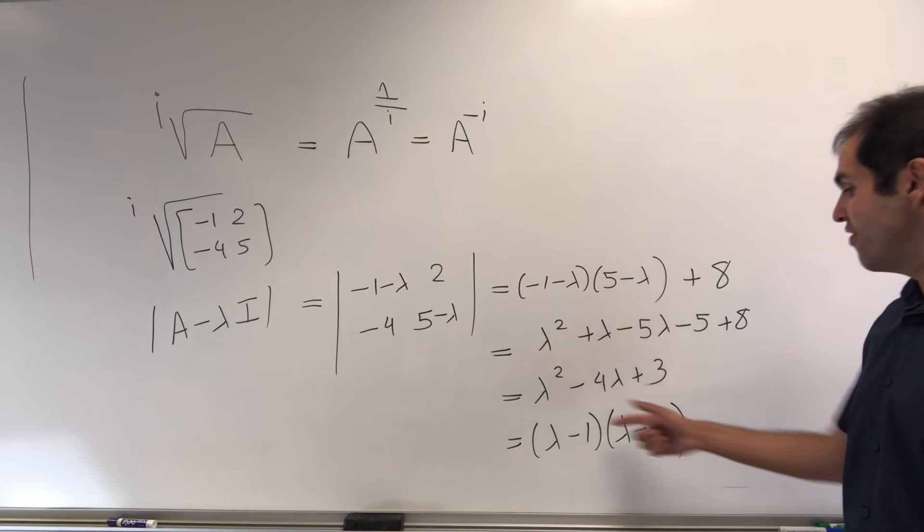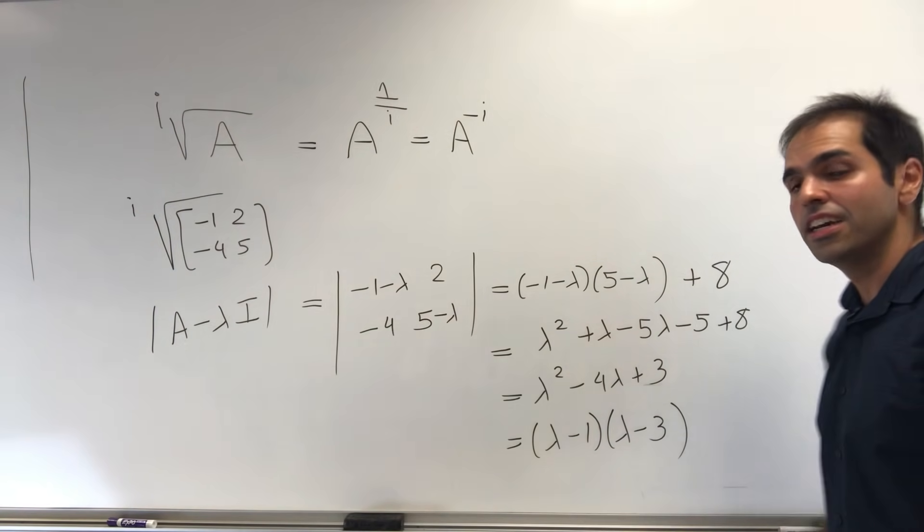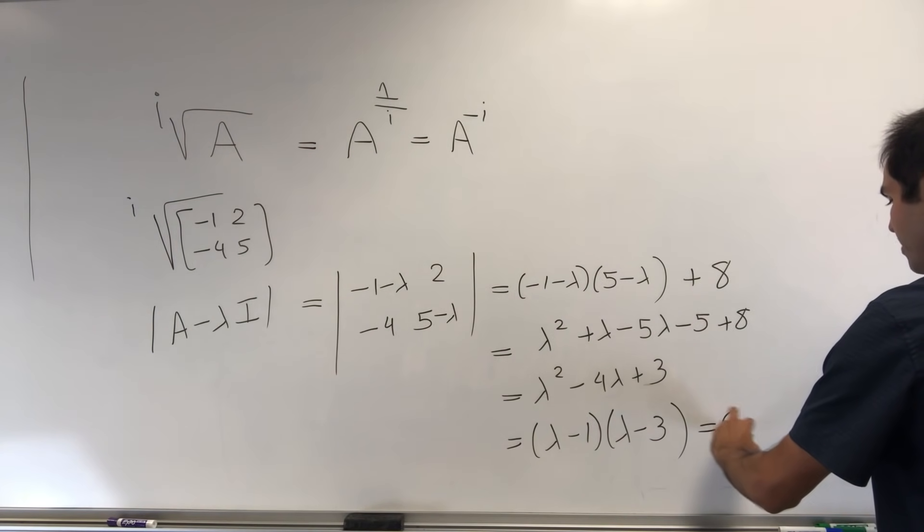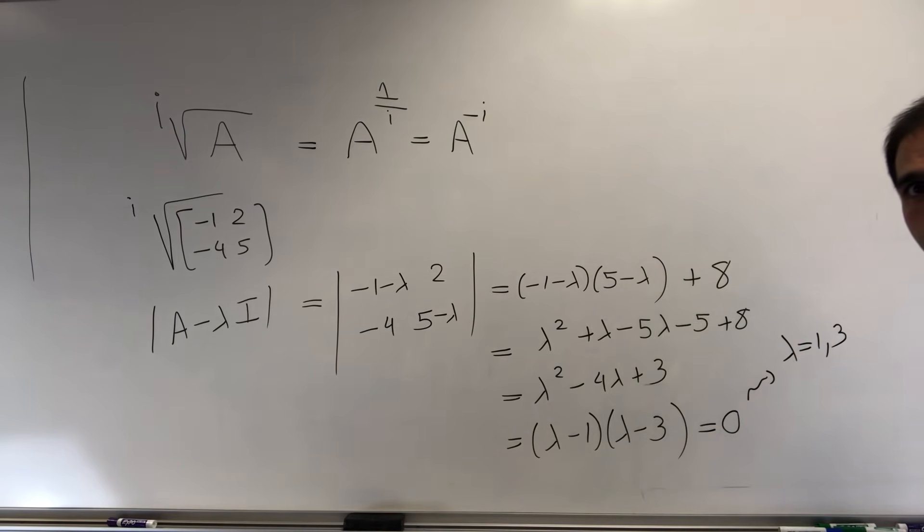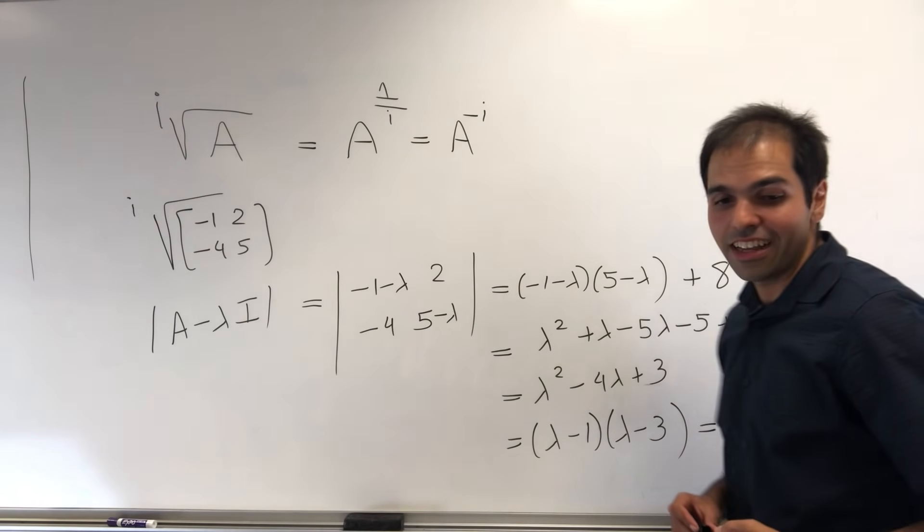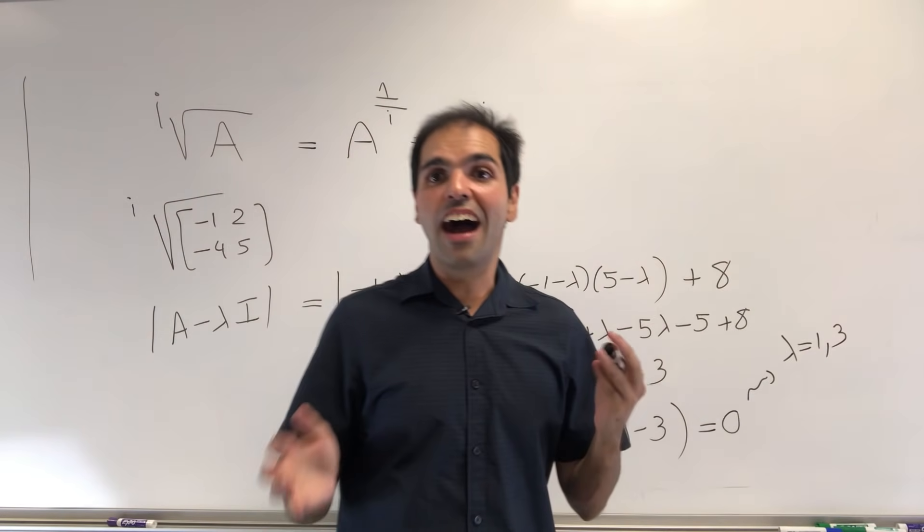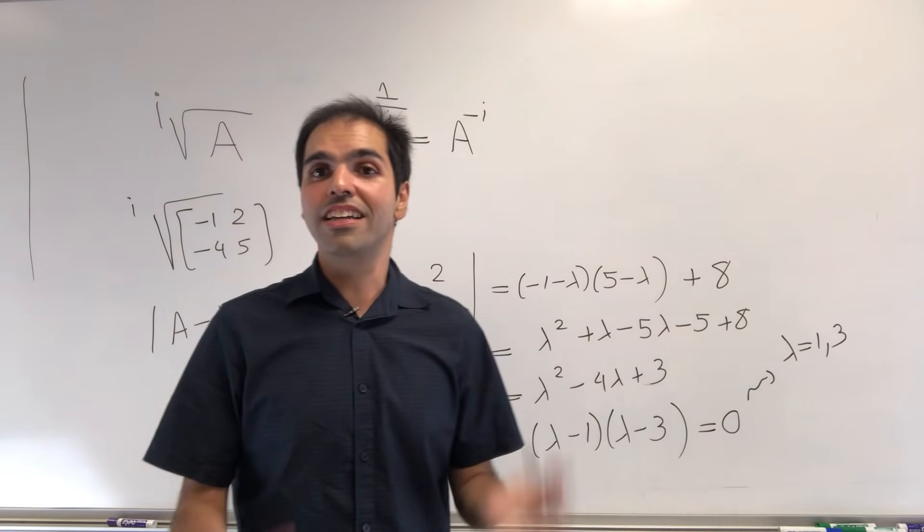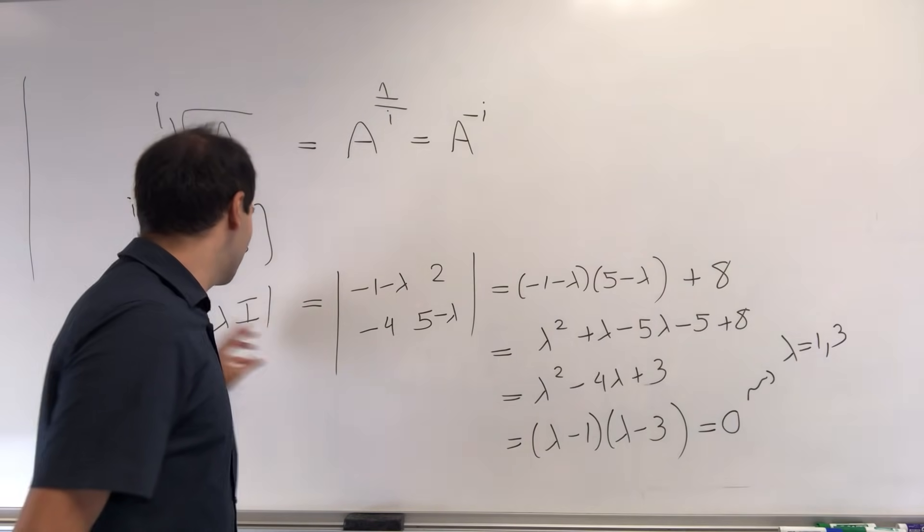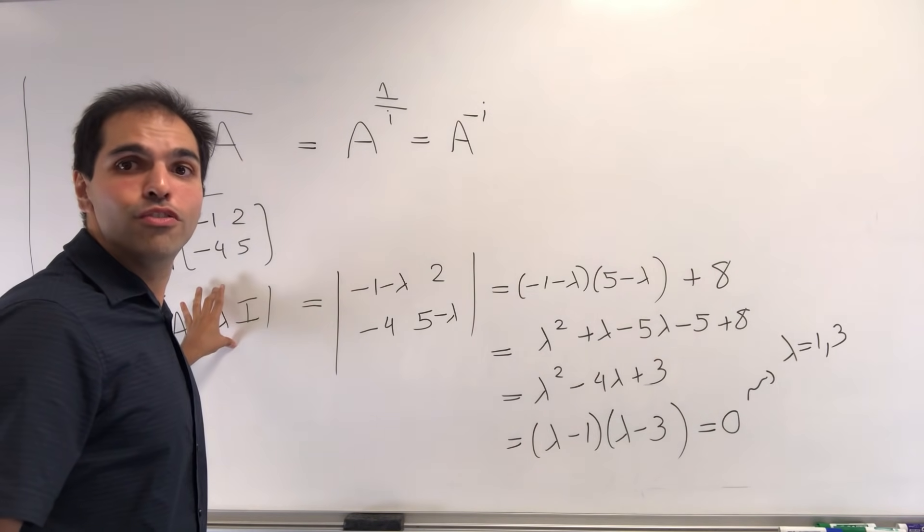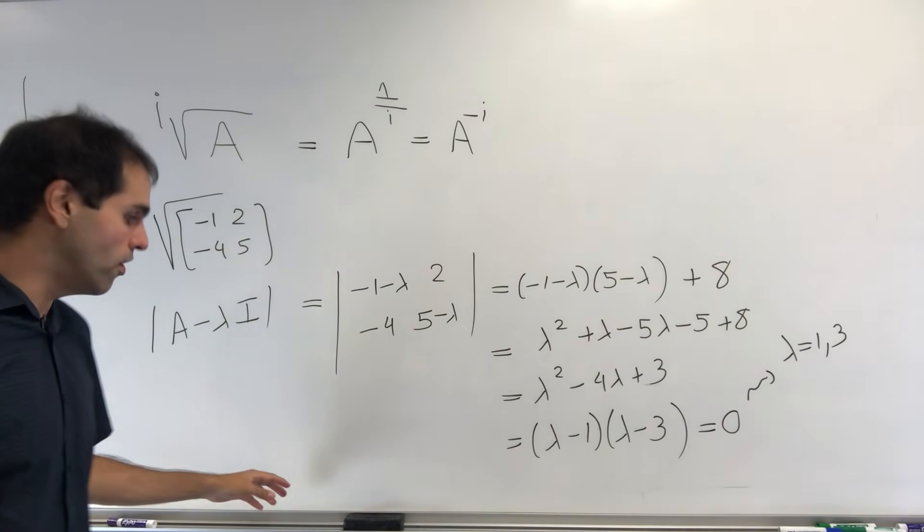So in other words, the eigenvalues here are precisely 1 and 3 because you set that equal to 0. All right, and then once you find the eigenvalues, you can also find the eigenvectors. And that I'm going to skip.